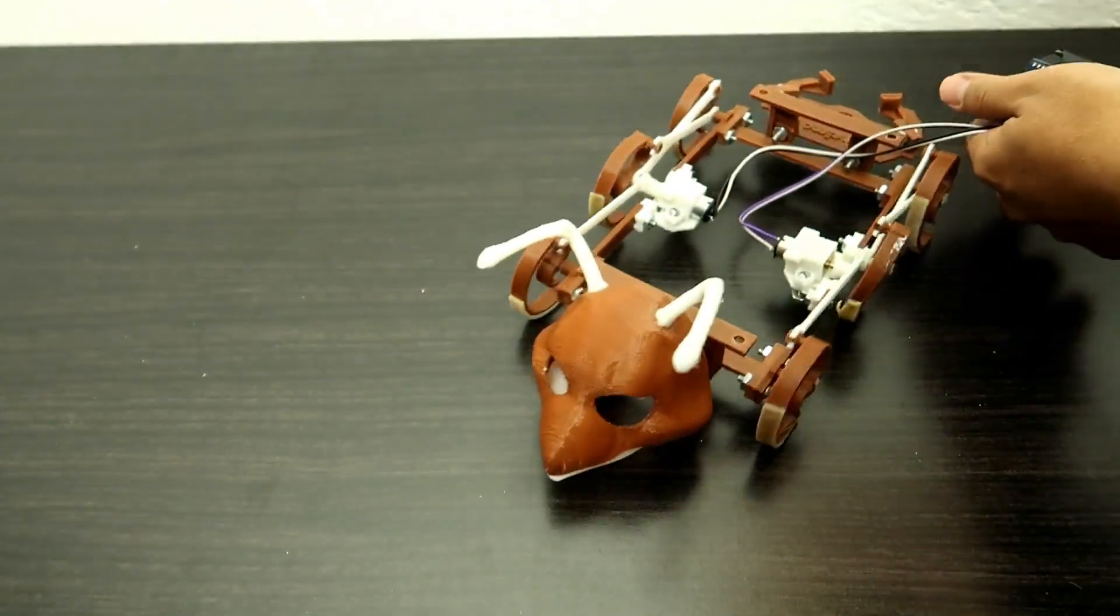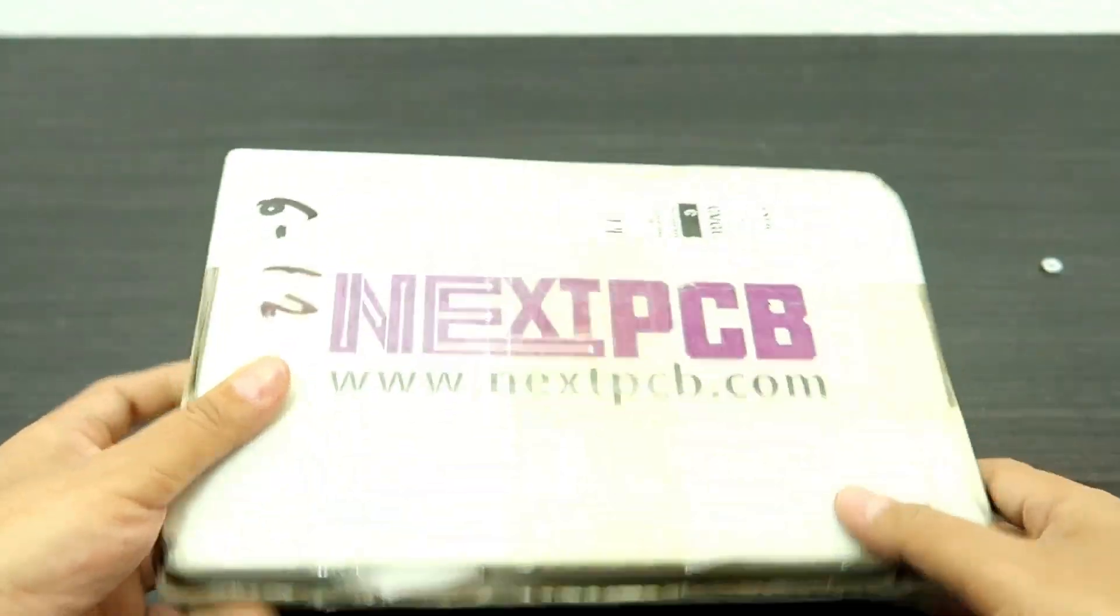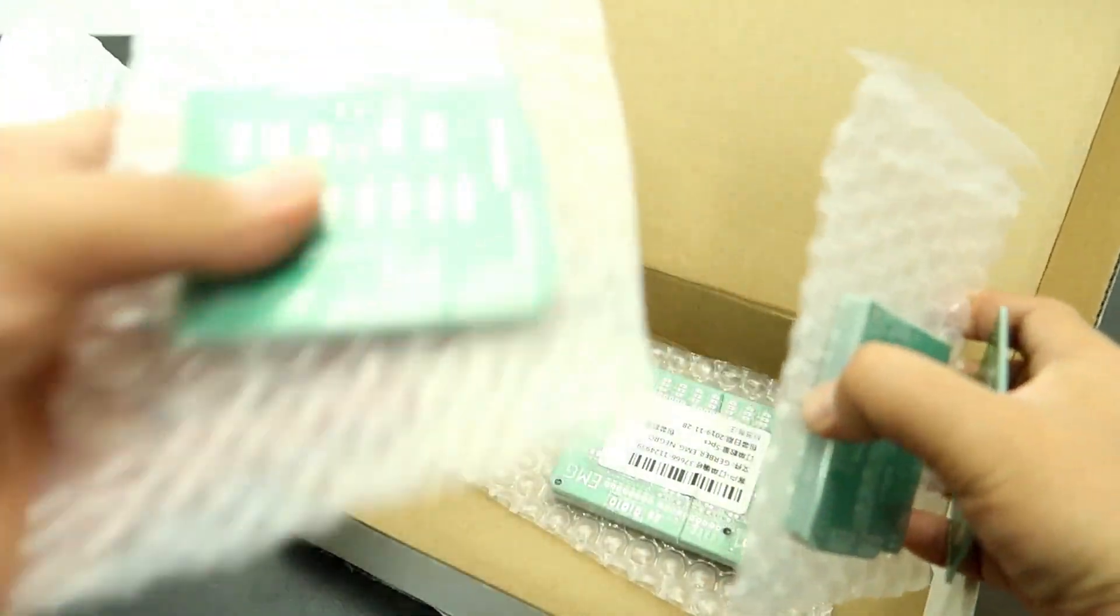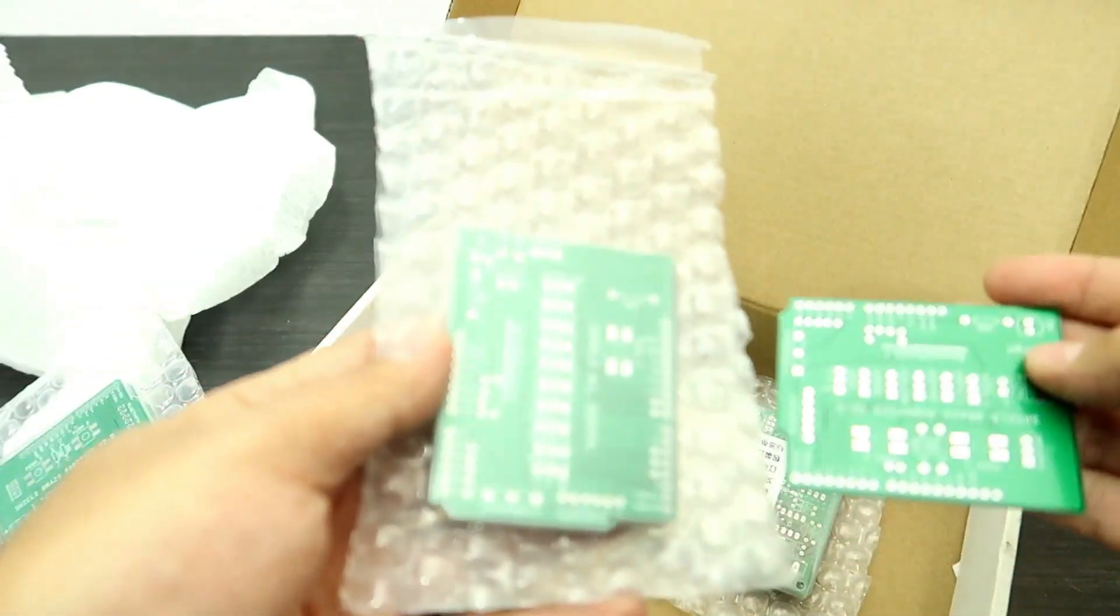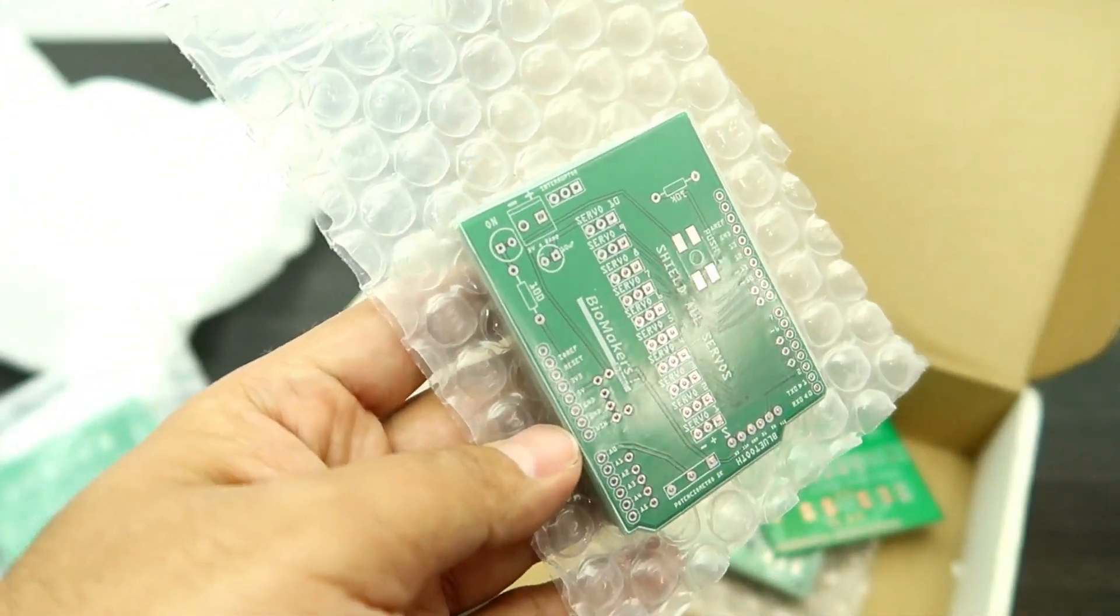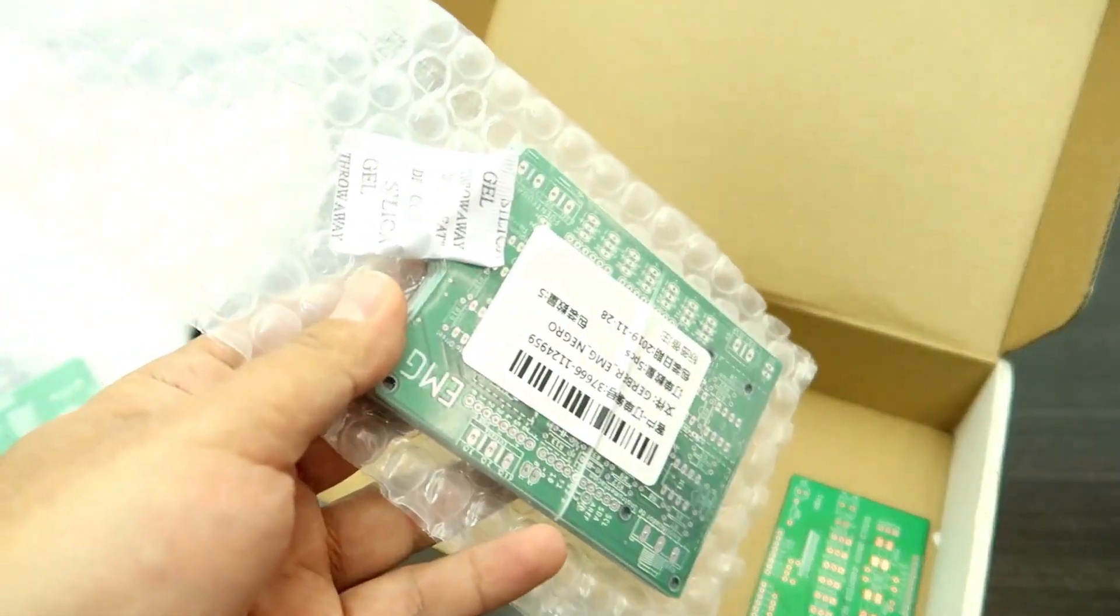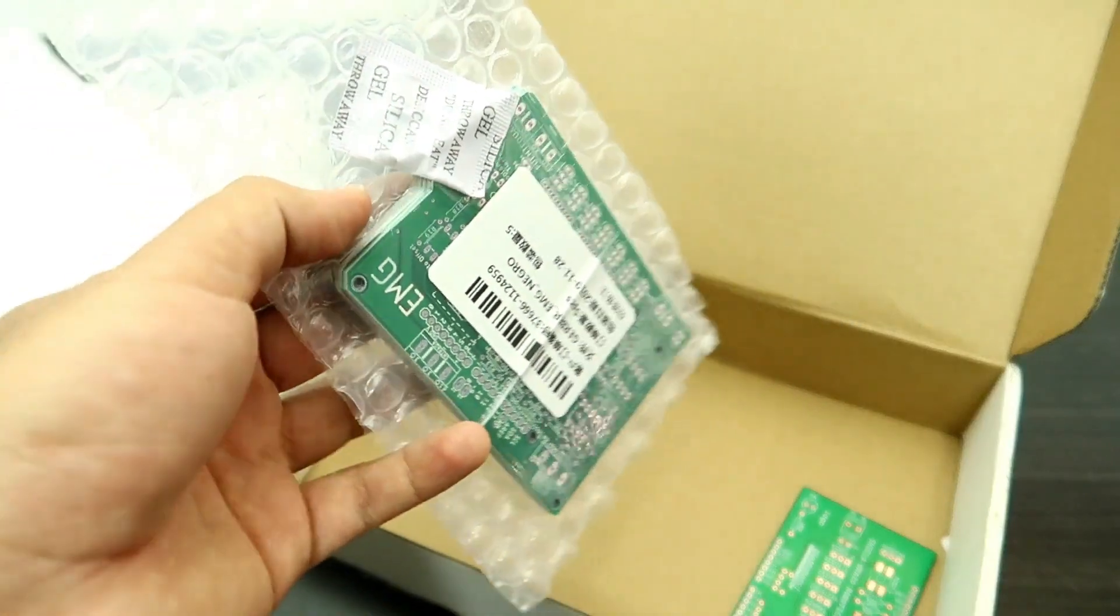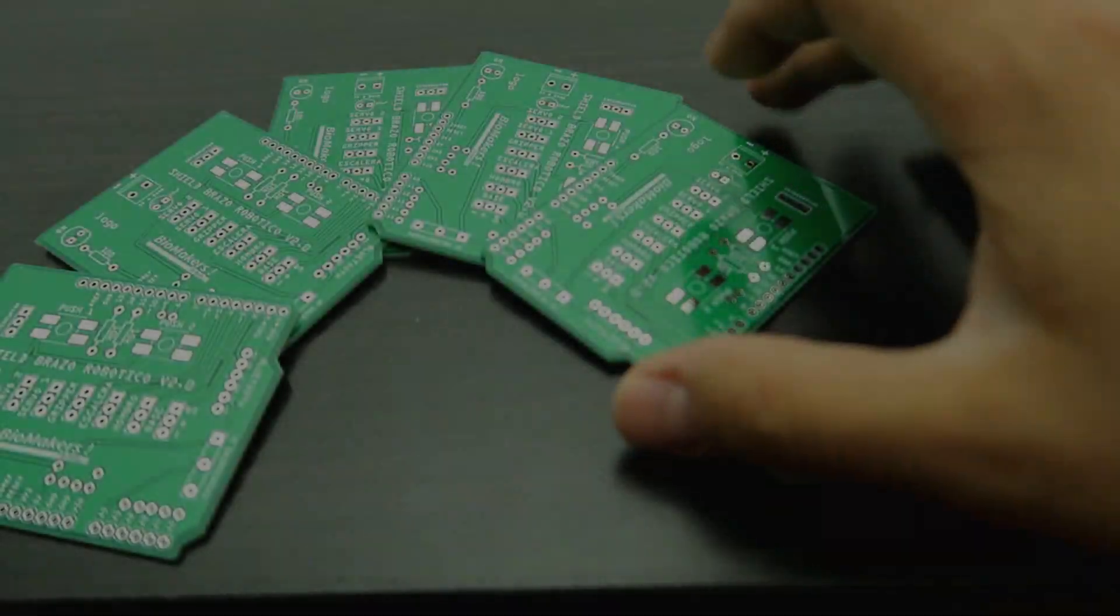Ya han llegado los PCB de nuestros amigos de NextPCB. Son para todos los proyectos que vamos a estar haciendo. Este es un proyecto, este es otro que me encantó. Este va a tener para 10 servomotores, miren aquí están 10 servos, va a estar genial. Y otro para los proyectos musculares. Vamos a soldar nuestra shield y ahorita comenzar a hacer con el puente H controlar a nuestra hormiga biónica.